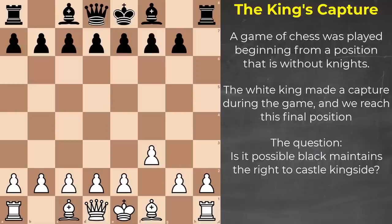Bear with me, those of you who are already experts in chess — experts in quotes. In order for black to maintain the right to castle kingside, the king and the kingside rook cannot have moved. Then we'd have this maneuver where the king goes there and the rook goes here.